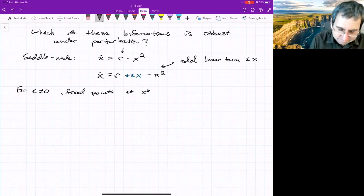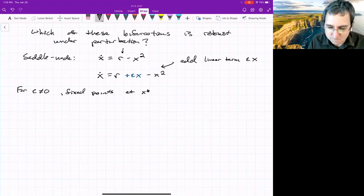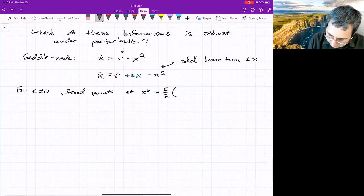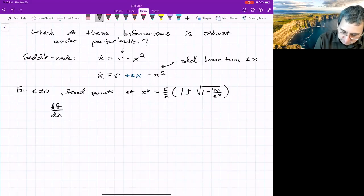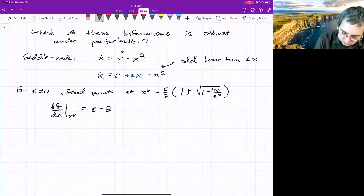For epsilon not equal to zero, we have fixed points at x star equals epsilon over 2, 1 plus or minus square root 1 minus 4r over epsilon squared. So we have fixed points there, and we could look at their stability, df/dx at x star. Remember this, the sign of this gives us the stability. It ends up being epsilon minus 2 x star.